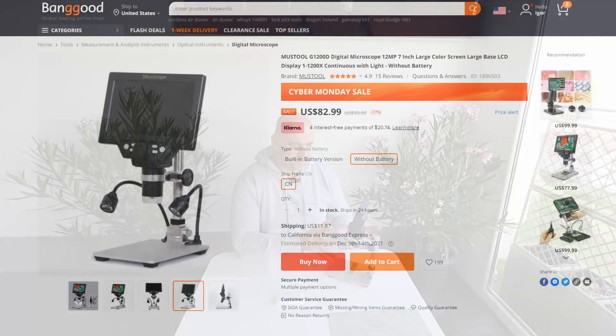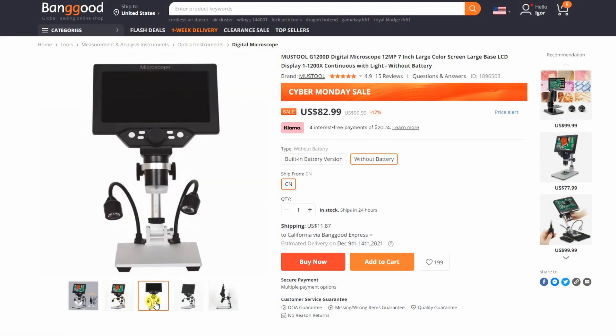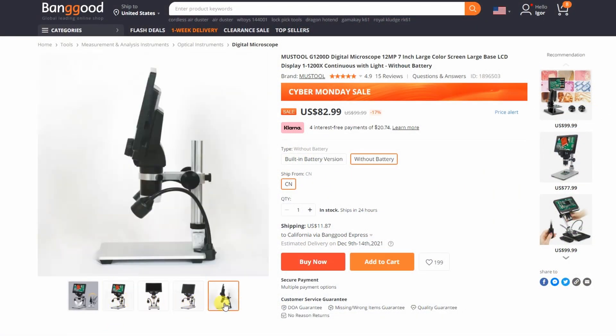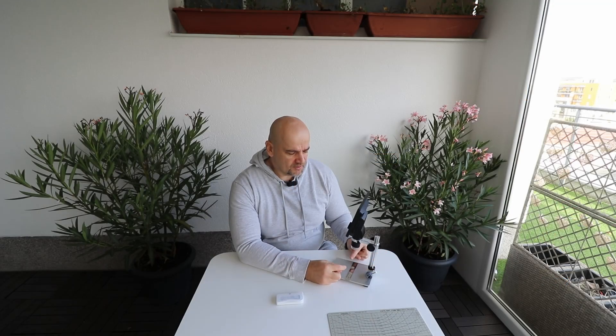I saw a version on Banggood where they have a very similar microscope but it has two additional sources of lights from the side. And we can place those lights to point on the object and they are always in the same position independent of the height of the digital microscope.